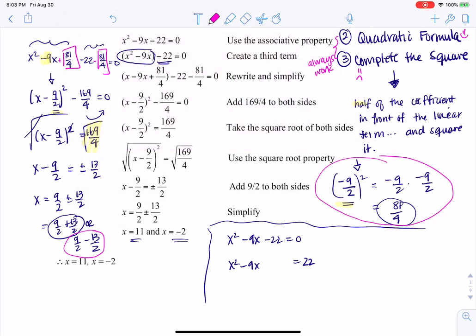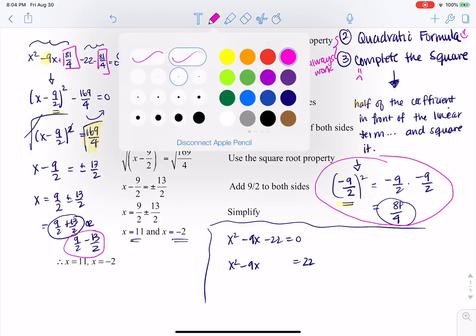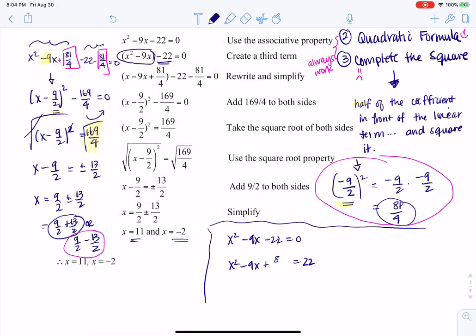And when I say shenanigans, the shenanigans I'm referring to are all of these things right here. I take negative 9, I divide it by 2. I take half of the coefficient of the linear term, and I square it, and I get to this 81 fourths. And so another way that teachers will do this is we'll just say we'll add 81 fourths to both sides. And then what this winds up being is x minus 9 halves squared, and directly here you get 169 over 4.